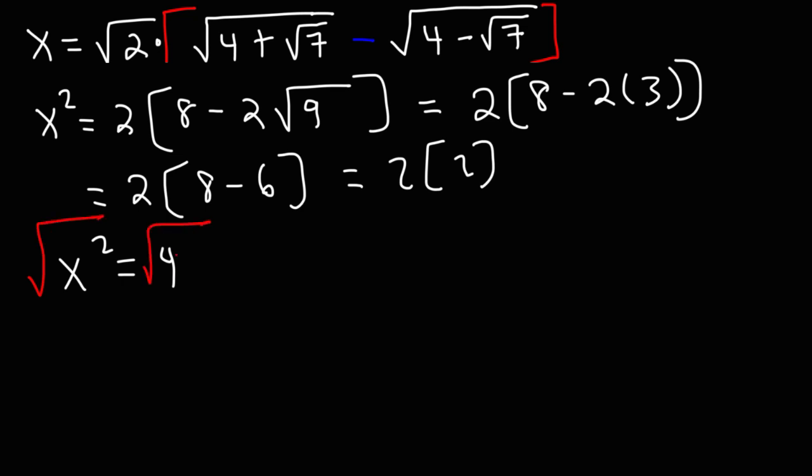To get x by itself we need to take the square root of both sides, giving us plus or minus 2, because 2 squared is 4 and negative 2 squared is also 4. But which one is the answer — positive 2 or negative 2?